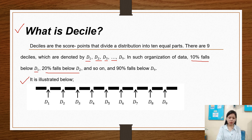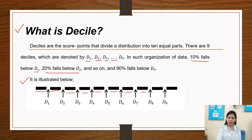It is illustrated below. D1 is 10%, D1 to D2 is 10%, D2 to D3 is 10%, D3 to D4 is 10%, D4 to D5 is 10%, D5 to D6 is 10%, D6 to D7 is 10%, D7 to D8 is 10%, D8 to D9 is 10%, and D9 is 10%, for a total of 100%.